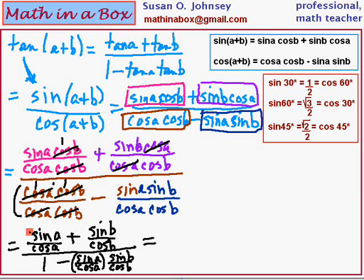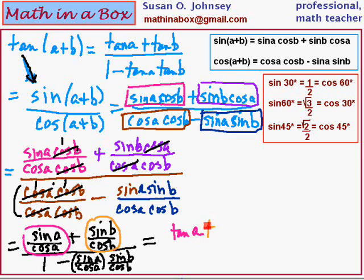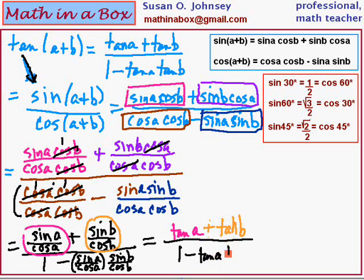What does this equal? Using the identity that the tangent is the sine divided by the cosine, we can change the first fraction to the tangent of A, and similarly the second expression becomes the tangent of B. Drawing our long fraction bar, we have 1 minus the tangent of A times the tangent of B in the denominator. And if you look, that is the identity I had written at the beginning of the problem. We have proven it to be true.